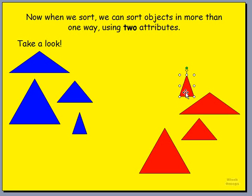Now let's have a look. Does this work? On the left we have triangles — they're different sizes, but they're all triangles and they're all blue. On the right we have more triangles, but they're also different sizes and they're red. So the two attributes we used here to divide and make groups: